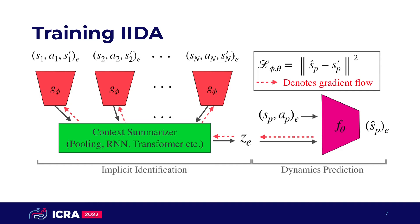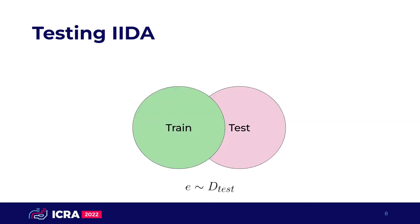This encourages the model to learn to encode useful information about the environment directly from context without knowing the true environment variations. At test time, we simply collect new context data from the test environment to pass to the Implicit Identification model.